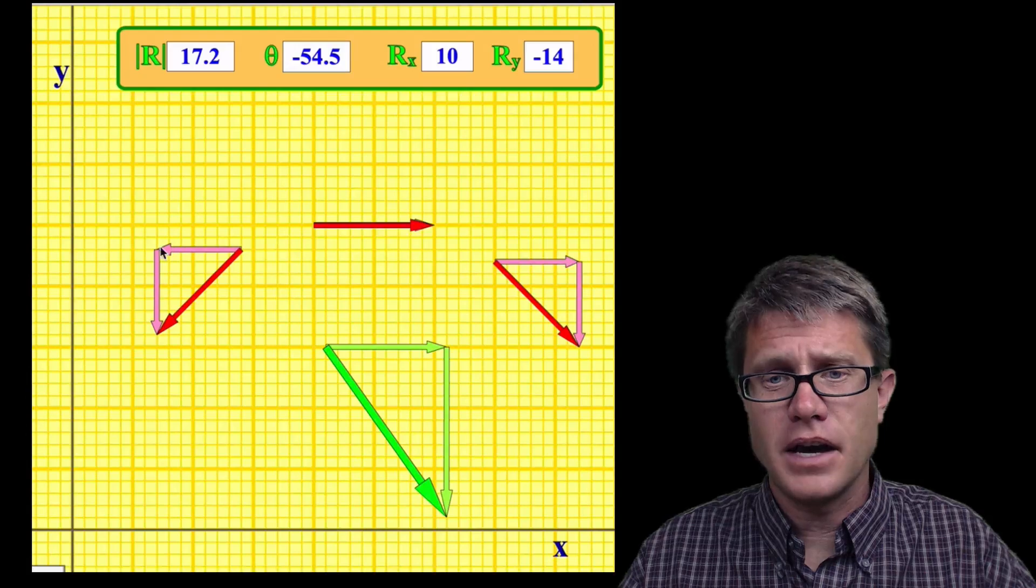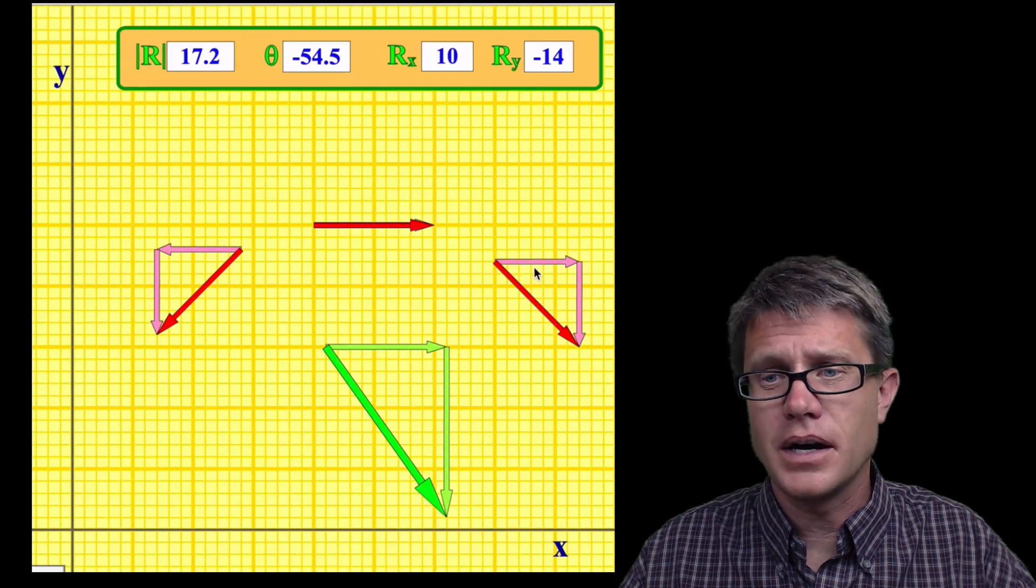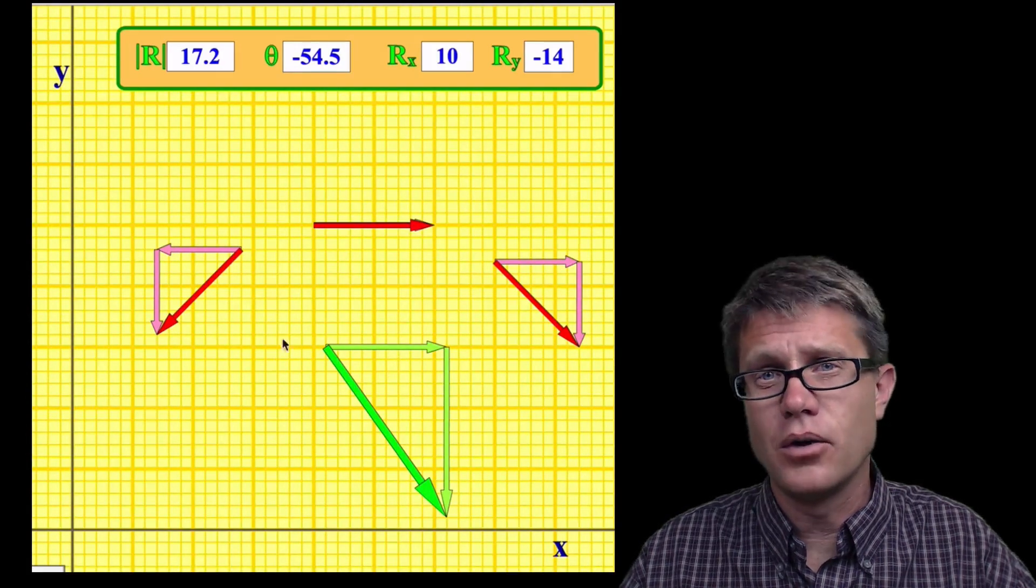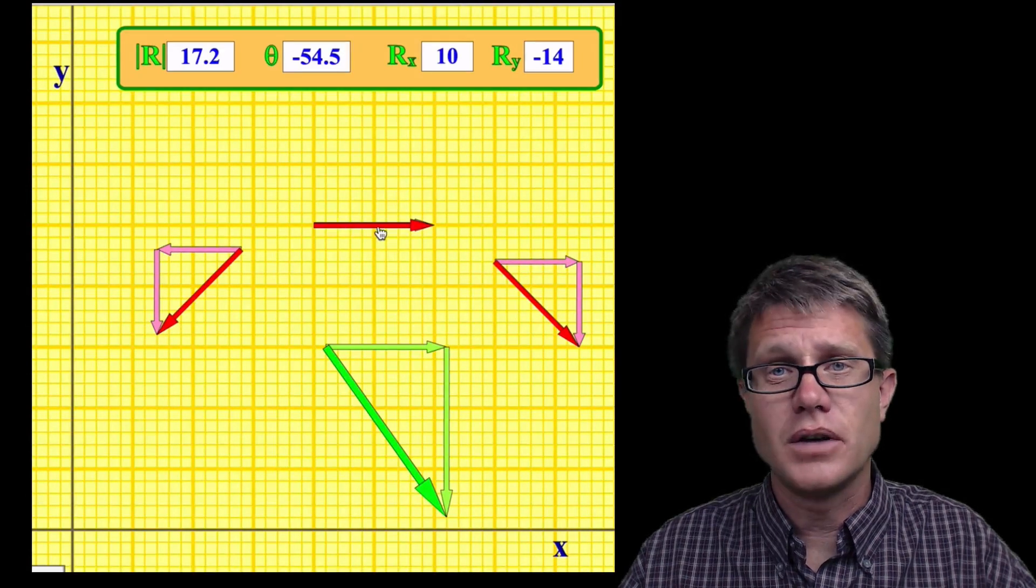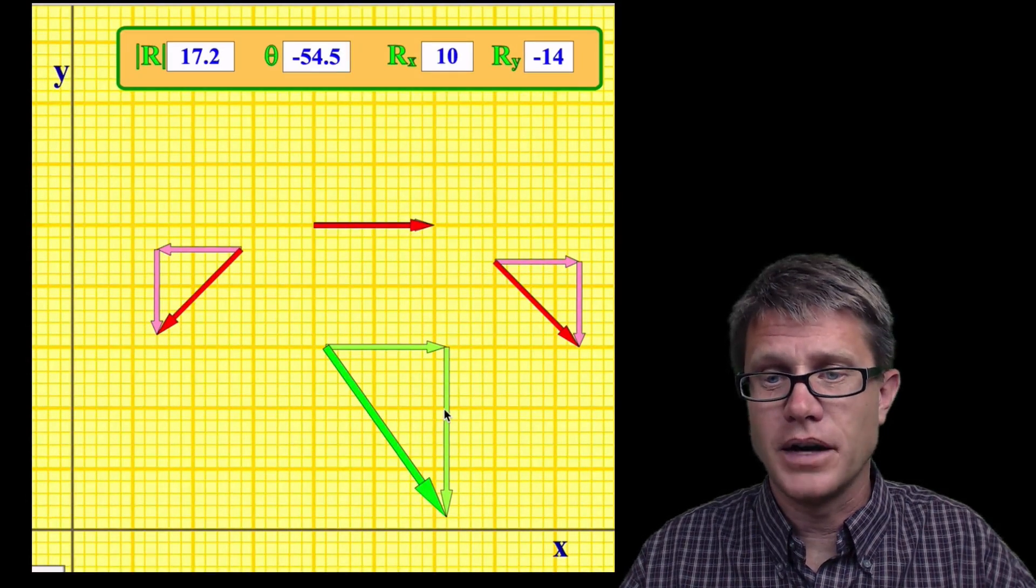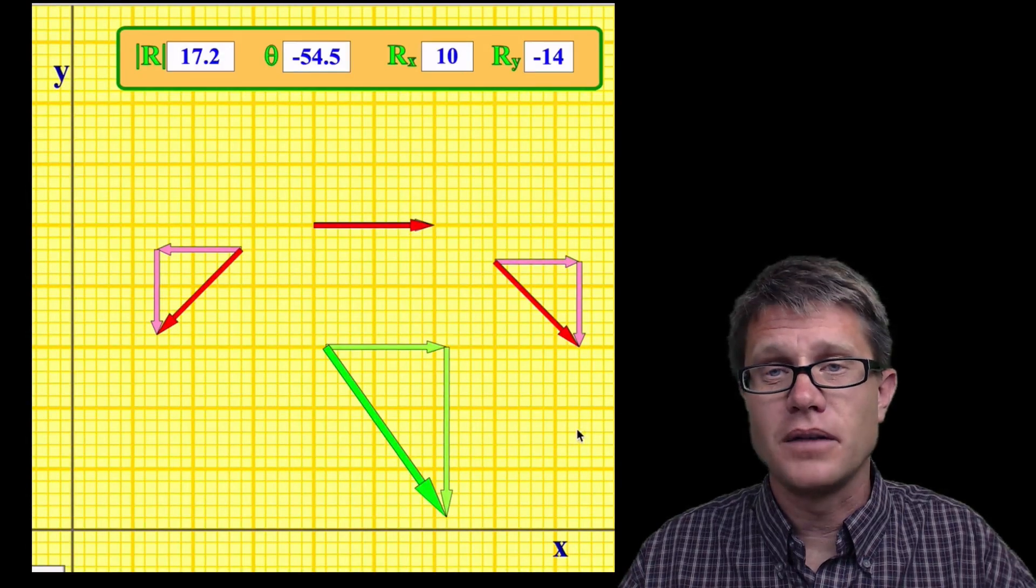And so if I take just the x, this one goes to the left, this one goes to the right, that one goes to the right, you can see why the overall sum goes to the right. And so I could do the same thing here. Those two go down. This one does not. So we are going to go double down like that. And so that is going to be my vector sum.